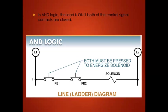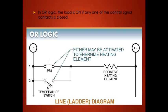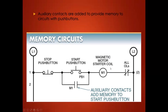When we talk about logic, two push buttons in series represent AND logic — this button and this button must be pushed to energize the solenoid. OR logic means this button or this temperature switch must be pressed to energize the heating element. A memory circuit uses auxiliary contacts from a motor starter or relay coil to keep itself energized. When I push the start button, M1 energizes, closes its contacts, providing an alternate path for current flow so I can release the start button.